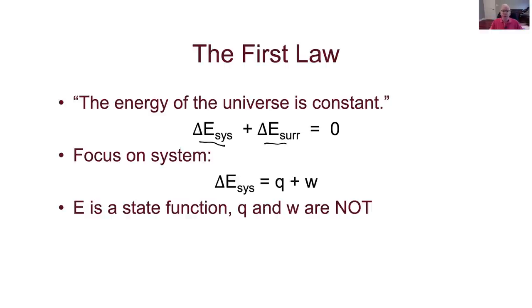When we focus on the system part, because that's the part of the universe that we're interested in, we can say that the system can gain or lose energy in two ways. Those are heat and work. So we say delta E for the system is Q plus W. Oftentimes we don't write the system subscript there, so usually we'll just see this written as saying delta E is equal to Q plus W, where the system is implied.